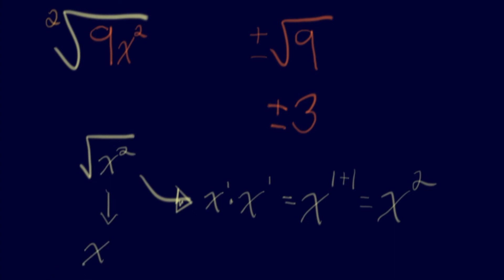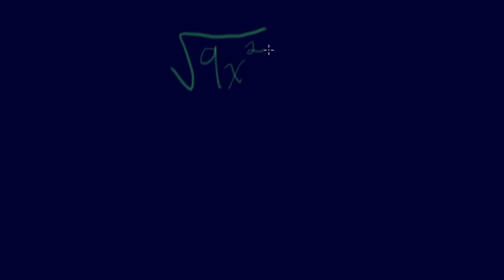Let's put everything together. If we had the square root of 9x squared, I like to think of it in two separate parts. The square root of 9 is 3, and the square root of x squared is x. So the square root of 9x squared is 3x.